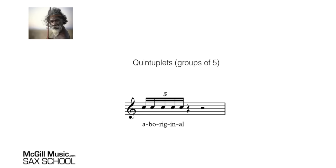Something else you come across that is quite complicated to work out are groups of five notes. Just like triplets — three in the time of two — in a quintuplet or group of five notes, all five of those semiquavers happen in one beat. And the word 'aboriginal' works really well for that. Groups of five can be quite confusing to work out at the start, so it's great to have a word like this to help you.